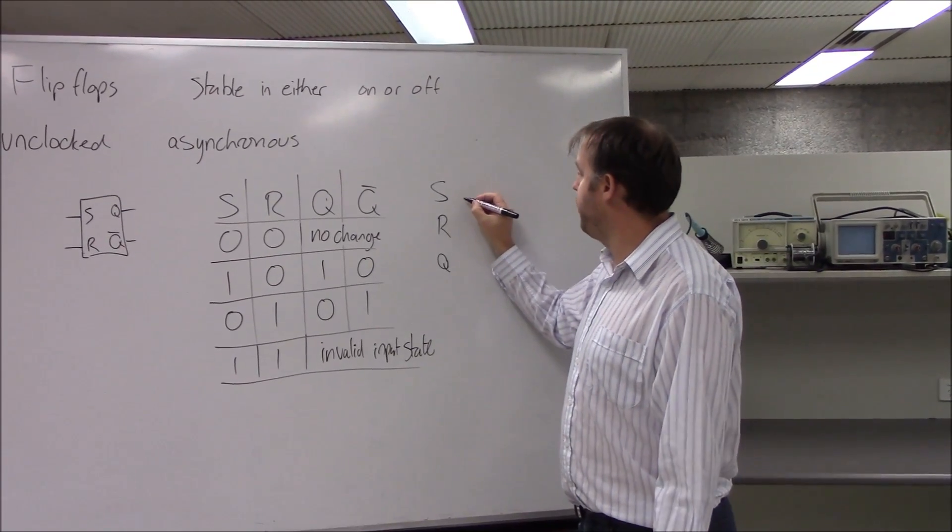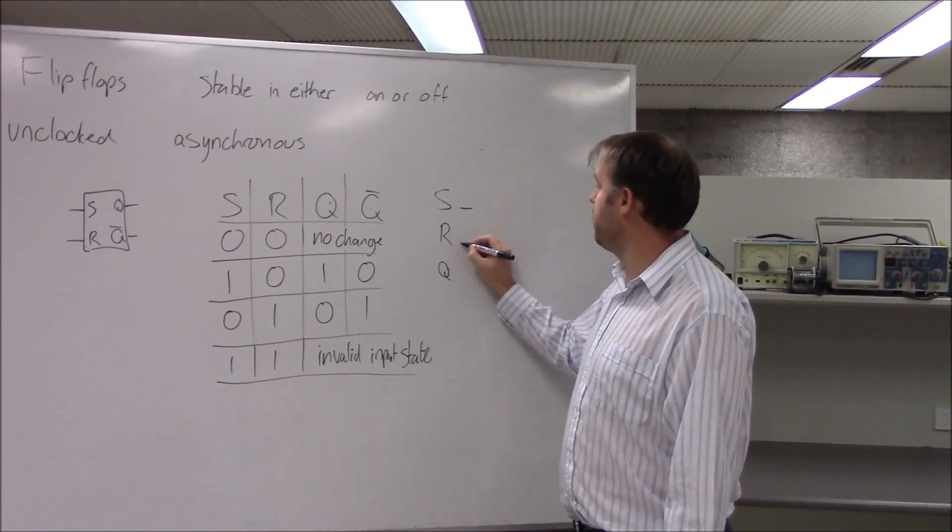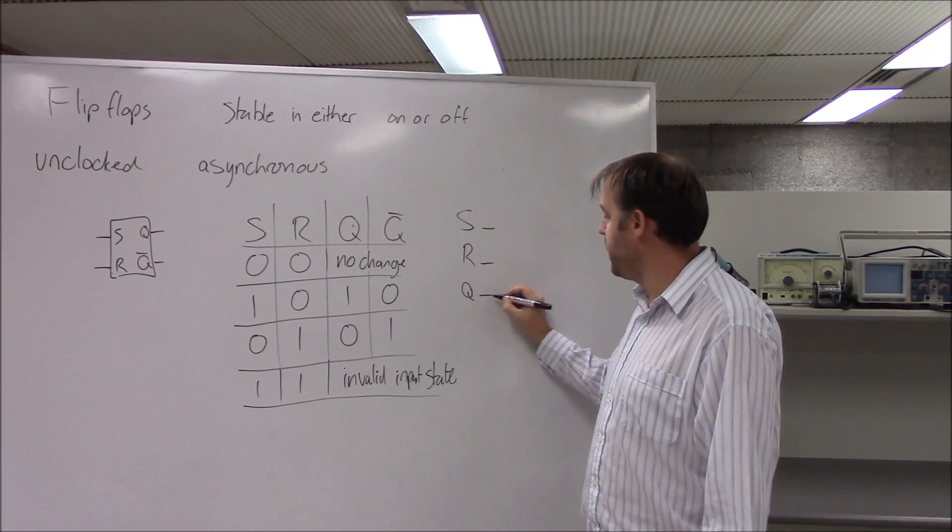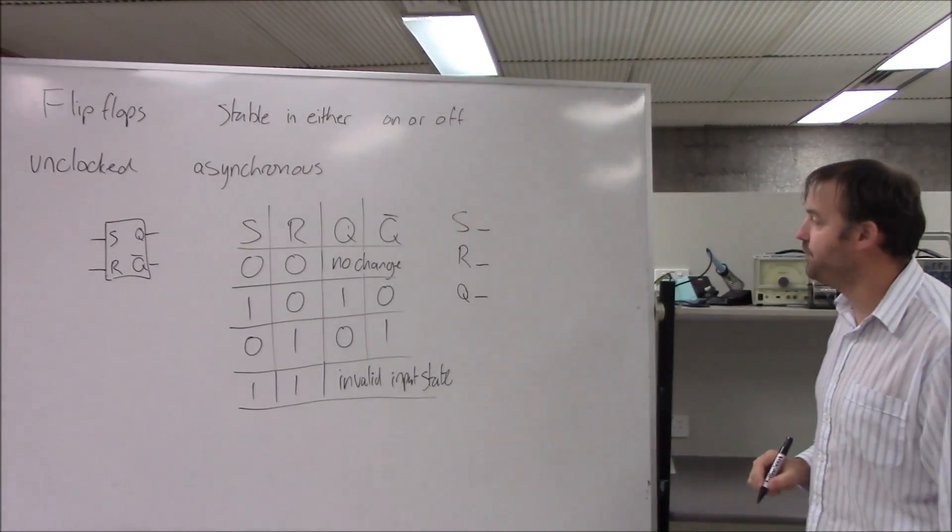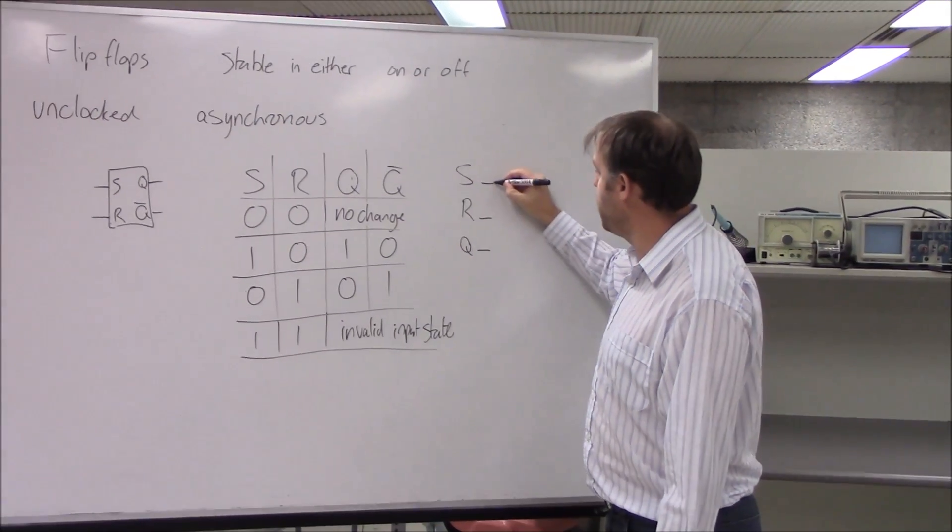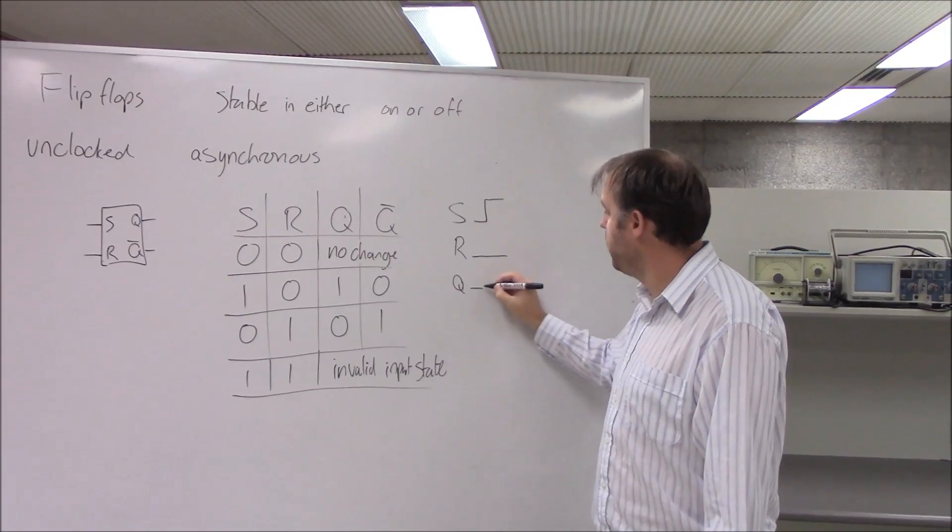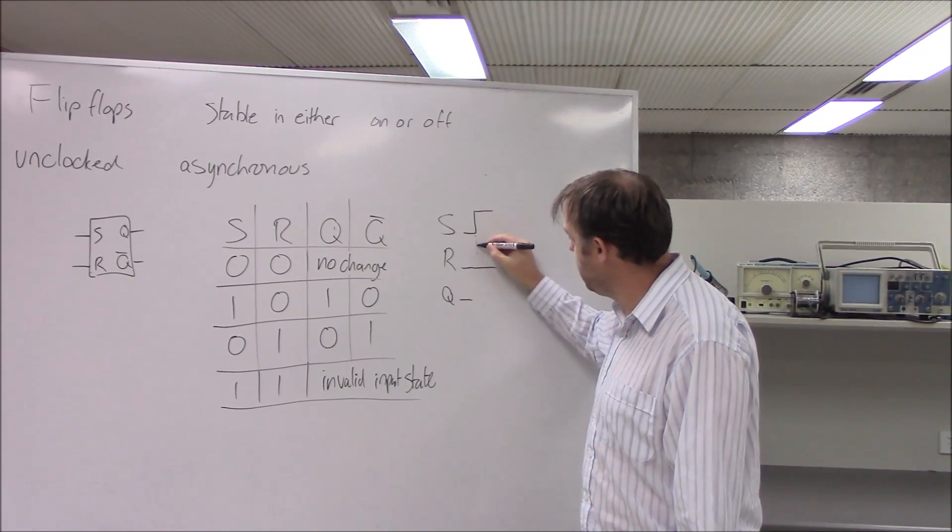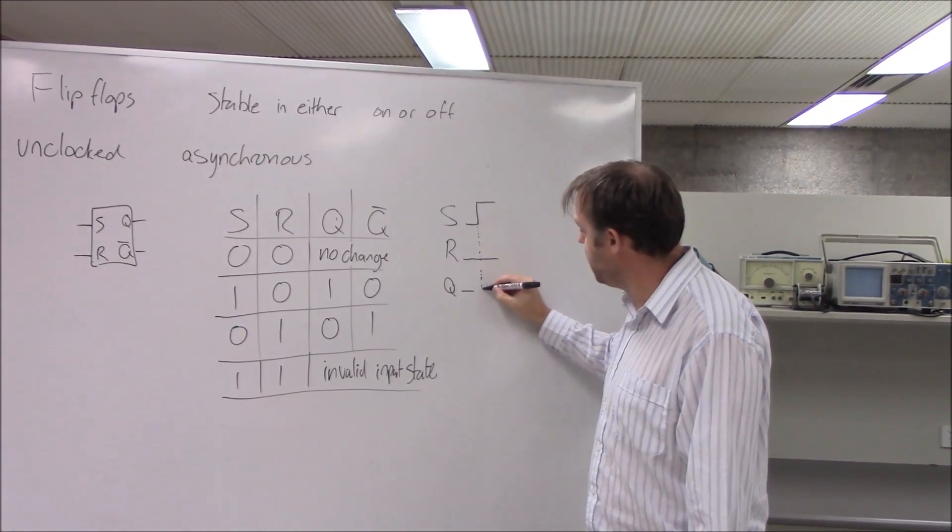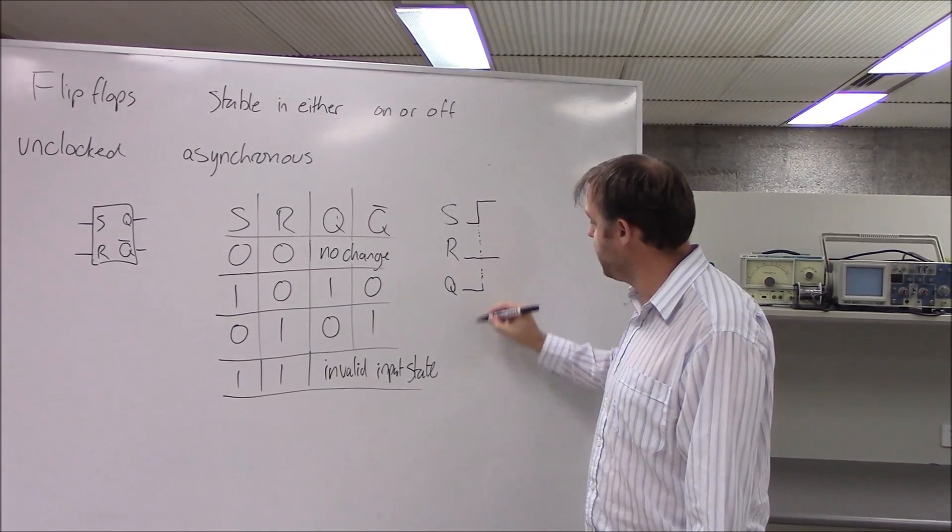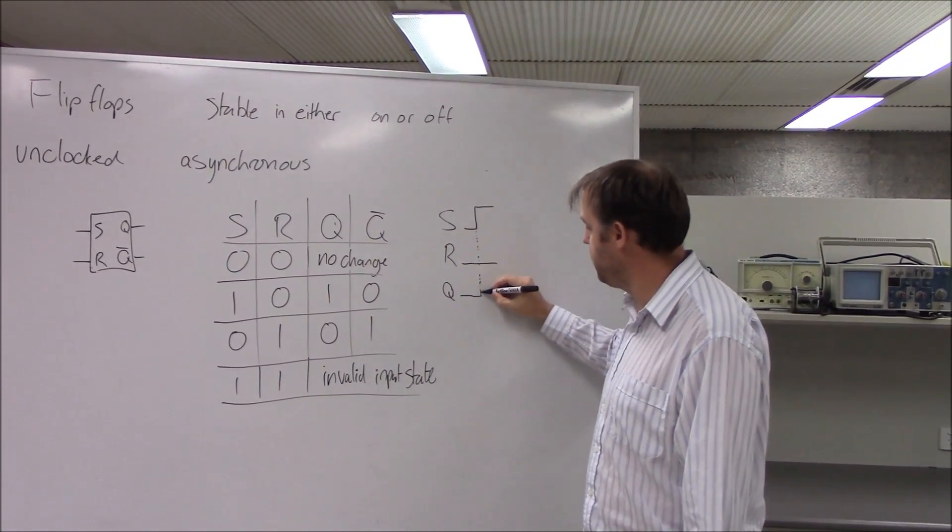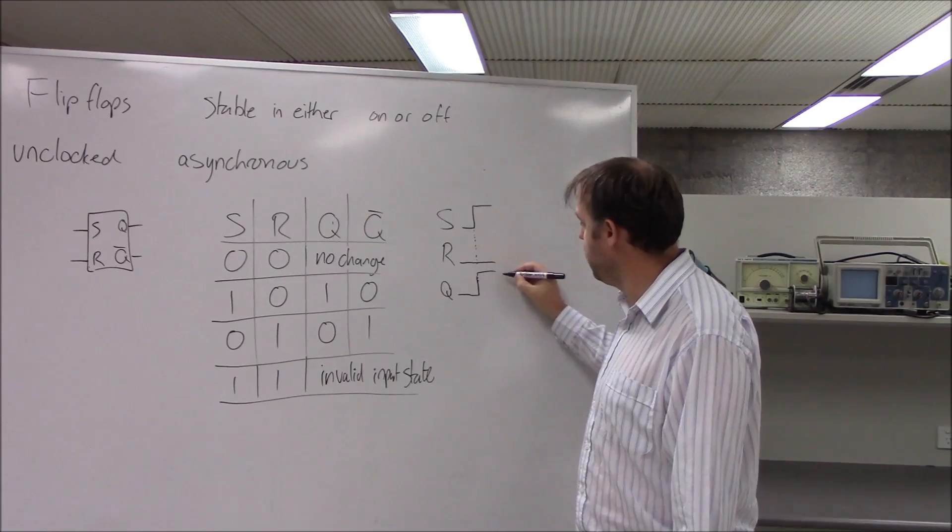If set is low and reset is low, and let's say that Q starts as low as well. If I change set to high and keeping reset low, Q at nearly the same time will go high as well. I'm just going to draw them as at the same time. Q will change to high.